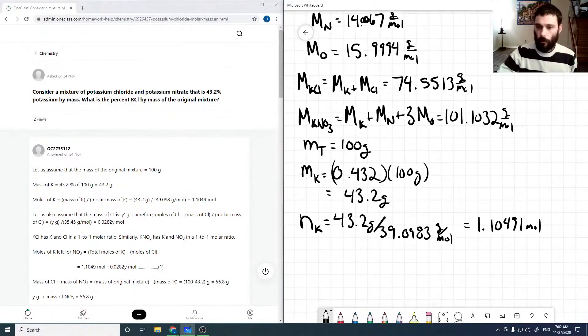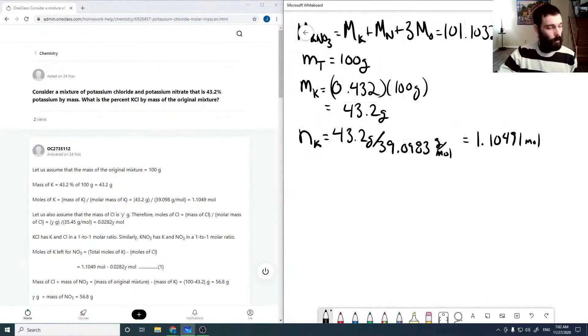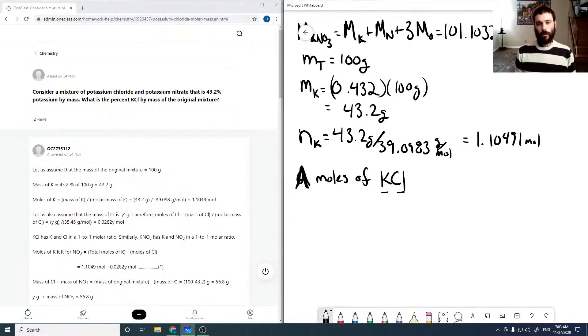Okay, so if we consider A moles of KCl, and remember that this is a one-to-one so we get A moles of K from A moles of KCl. Maybe I'll just use a capital A just to differentiate a bit. So if we have A moles of KCl—